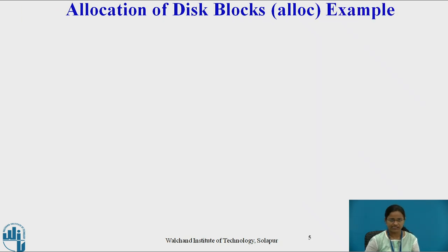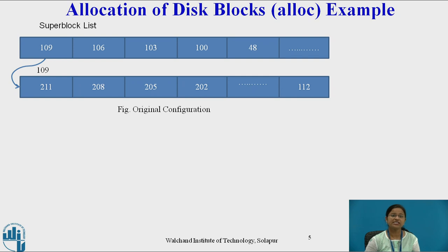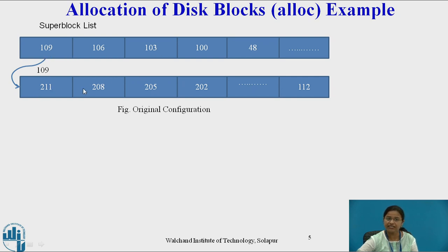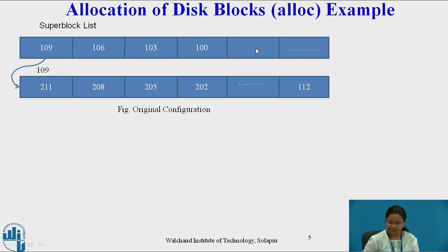Now let us see an example. This is the initial super block list. There are n number of data blocks — here I have shown only two. The first data block contains an array of free disk blocks, and one entry from that array points to the next free disk block numbers. Whenever a process wishes to access a free disk block, the first disk block is allocated. Then whenever the process again wishes to write content to the file, the next disk block is allocated. Each disk block is allocated one at a time.